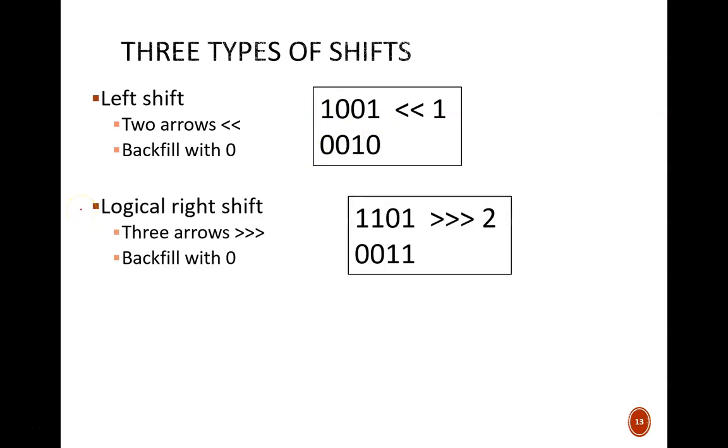The second type is a logical shift right. This is indicated by three right arrows. We always backfill with a 0 for a logical shift. As a result, 1101 shifted to the right by two bits yields 0011. These two rightmost bits fall into the bit bucket, and these two ones shift down.